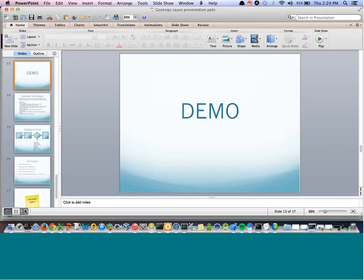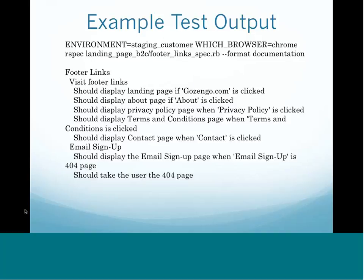I wanted to show you an example of one of our tests. This is an example of the output of one of our RSpec tests. At the very top we specify which environment we want and which browser — those are switches I've built into my framework — and then we run a specific test. By using the format documentation option, we get a really nice and easy-to-read output. If you didn't know anything about Selenium or RSpec, you would be able to read this and understand exactly what the test did. If there was any failure, you would see it on that line and know exactly what failed.